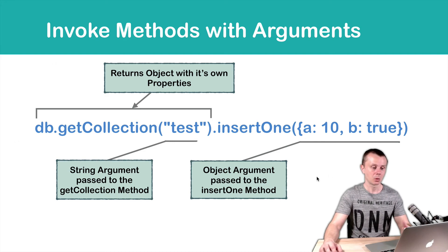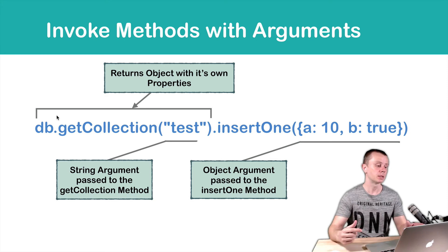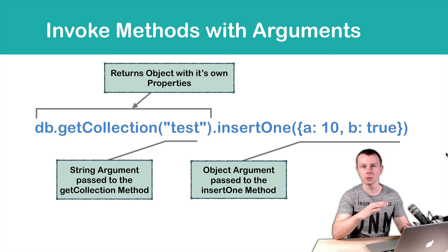And finally, we will get a result - a new document will be created in the collection called test. I will not execute this command now because we will talk about document creation later on in the next modules. But I just wanted to take this command as an example to demonstrate how you can pass arguments to methods.